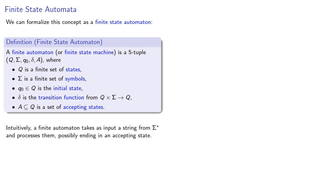Intuitively, a finite automaton takes as input a string from sigma star and processes them, possibly ending in an accepting state.